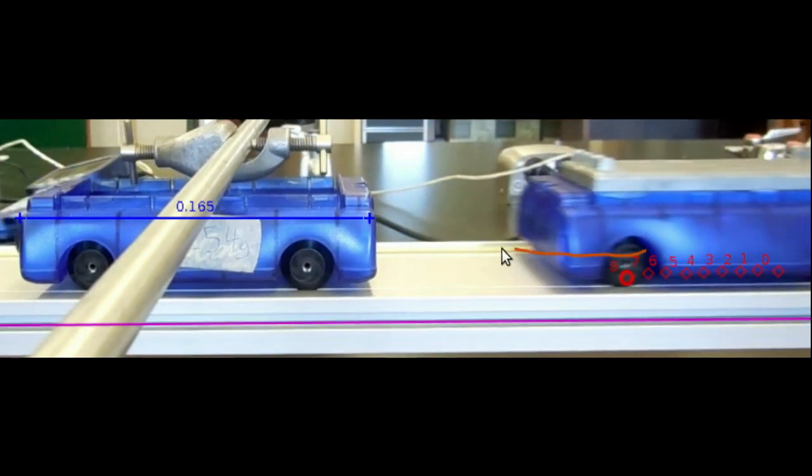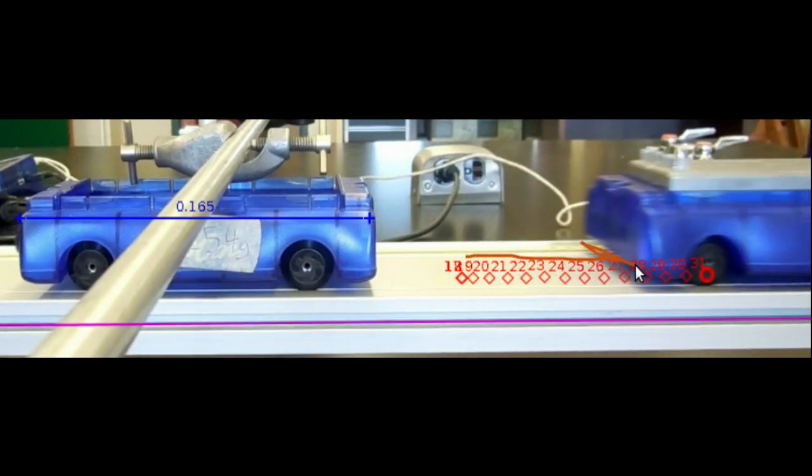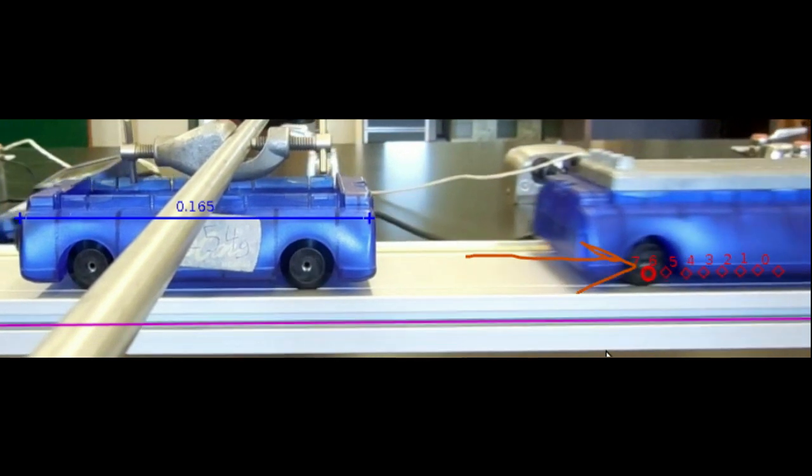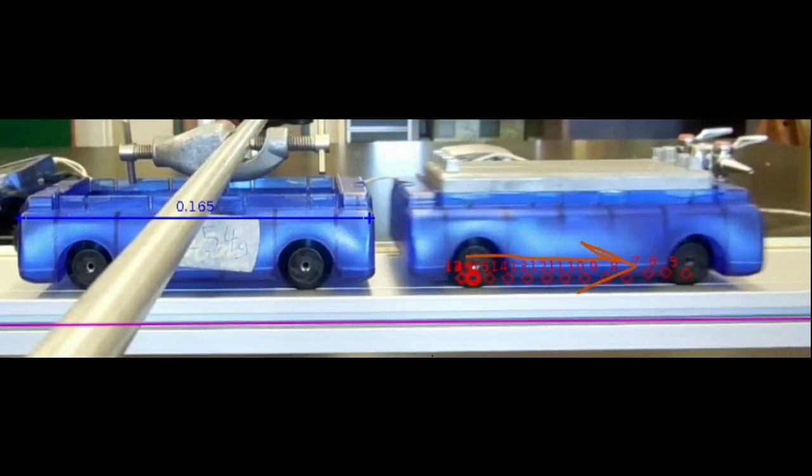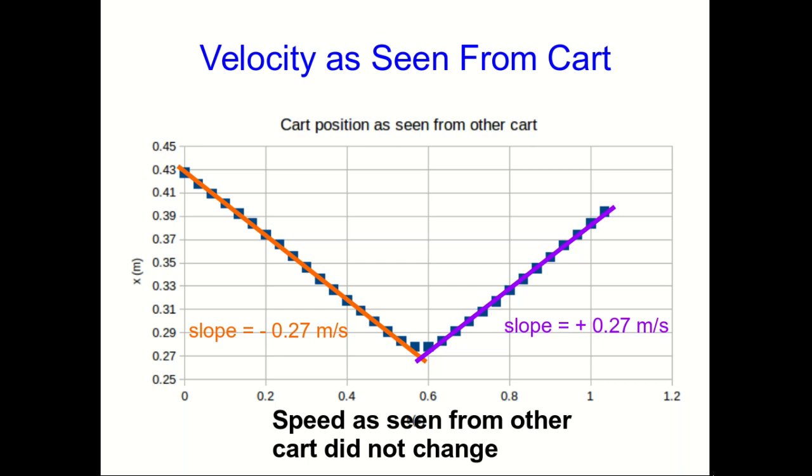I can plot a position versus time graph for one cart as you see it from the other cart. We can pull some slopes off—there's the slope before the bounce and the slope after the bounce. These are x components of velocity, and their magnitudes are the speeds. Notice that the speed as seen from the other cart is the same before and after the collision. This is very much like a very bouncy ball bouncing off the floor.